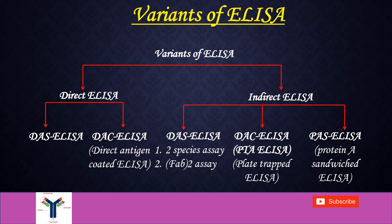In indirect ELISA there are three types. First one is double antibody sandwich ELISA, which has two types: two-species SA and Fab-2 SA. Second one is DAC ELISA, under which we generally use plate-trapped ELISA, that is PTA ELISA. The third one is PASS ELISA, that is protein A sandwiched ELISA.